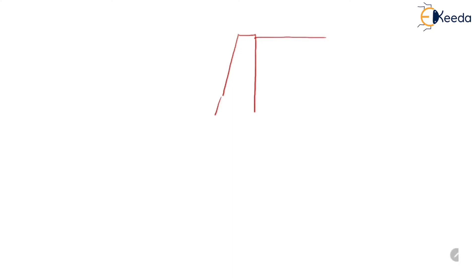Suppose this is the retaining wall, this is the soil retained by the wall, and suppose this is the sliding wedge. Coulomb assumed that this sliding wedge is in equilibrium — that means the summation of forces in the x direction and summation of forces in the y direction is equal to zero.